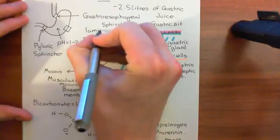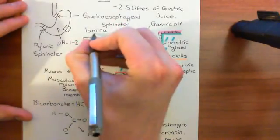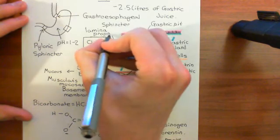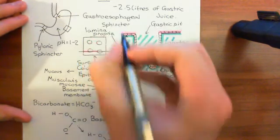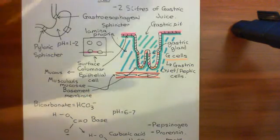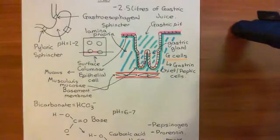And of course, you will have blood vessels in the lamina propria — little capillaries, arterioles, venules, and also lymphatic blood vessels.